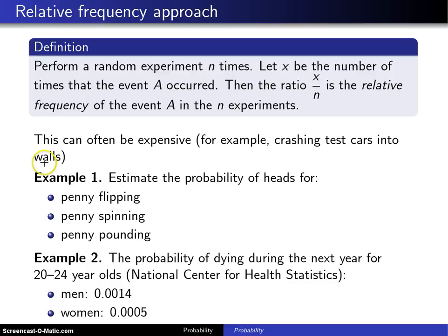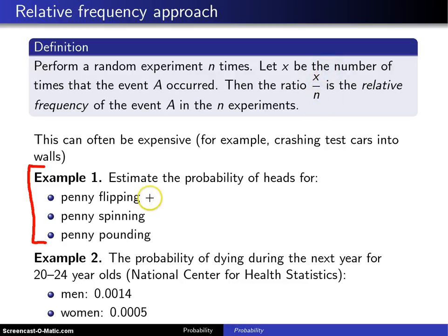Here is example one. In this case, n can be a larger integer because this is not a very expensive experiment. Let's say you want to estimate the probability of heads for flipping a penny. You can let n be some large number — maybe 50 or 100 — flip the penny that many times and count the number of times x that you get heads, then divide by the number of trials. That's your estimate.